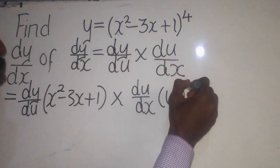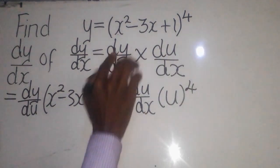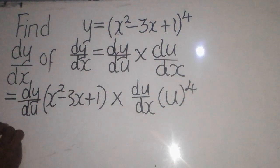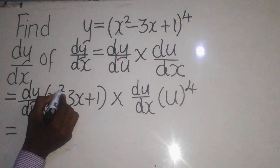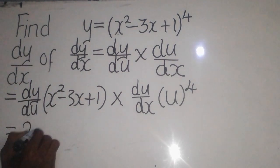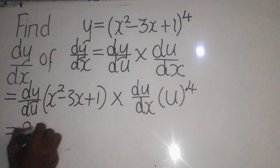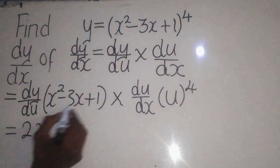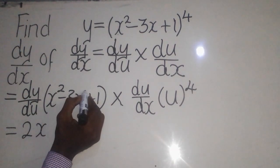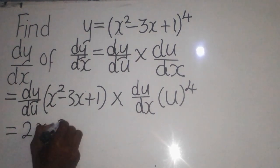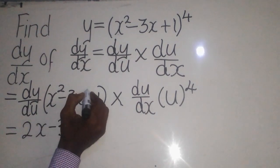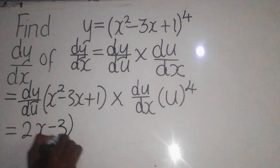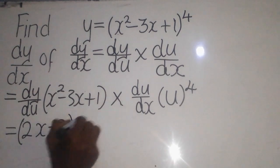Now we differentiate. You put u to the power 4. Remember that this expression is being represented by u. So now let's differentiate: it will be 2 times x, and 2 minus 1 gives 1, so we get 2x. Then 1 times negative 3 gives negative 3, and 1 minus 1 is 0, so x to the power 0 is 1, and we remain with negative 3. Then close the brackets.